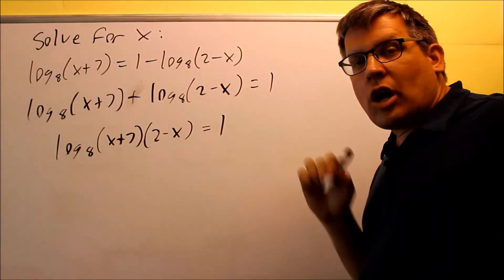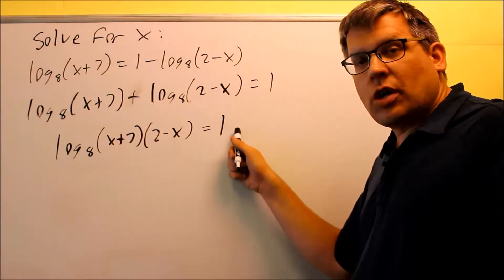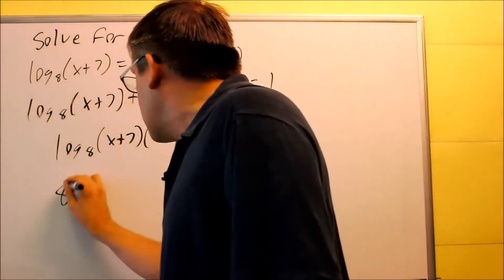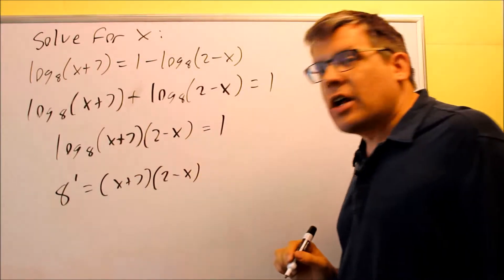Now we're going to change it from log form to exponential since we have a single log on this side. You take the base, raise the number after the equal sign. We're going to do 8 to the first power will equal x plus 7 times 2 minus x.